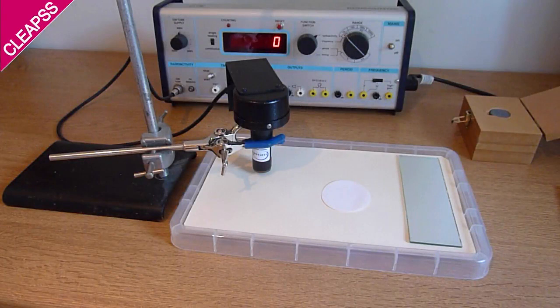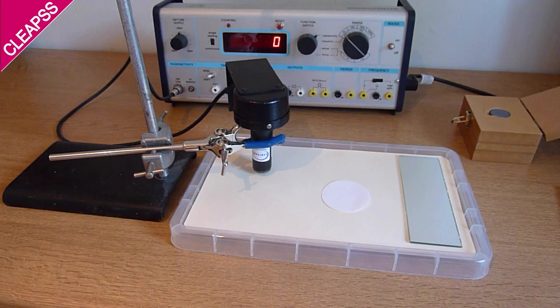You need a shallow plastic tray, stand and clamp, cellulose filter paper disc about 40mm in diameter although the size isn't critical, plain mirror, long forceps, pen and of course the GM tube, tube holder and counter. Set up the equipment as shown here.